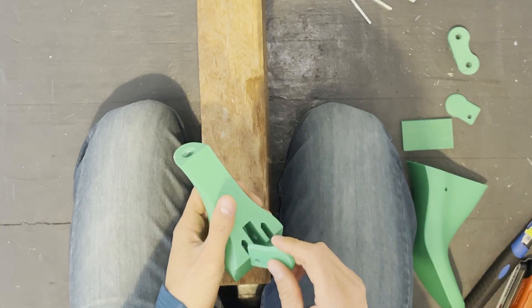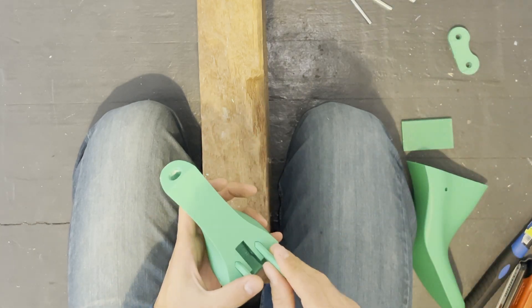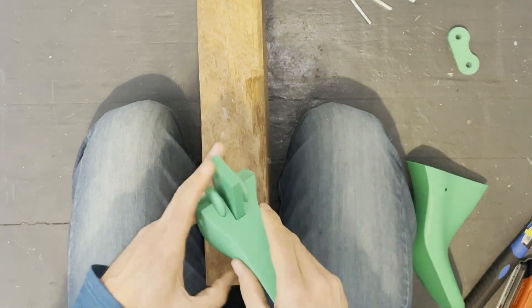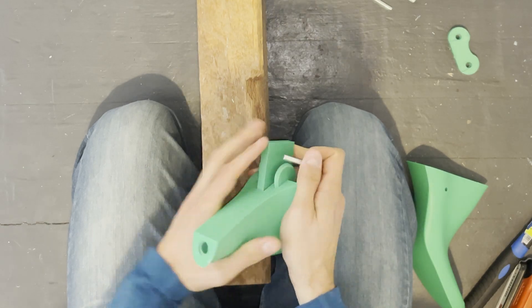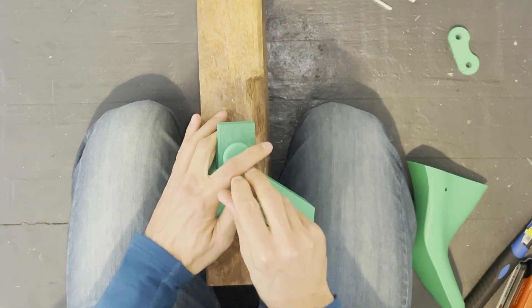The original 3D printed alpha joint design used discs as an interface between the front and back parts of the shoe last. This worked okay but there was some laxity in the joint.